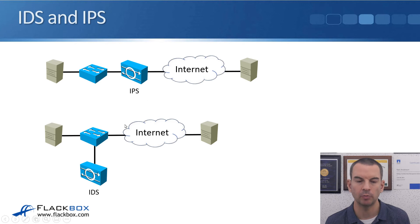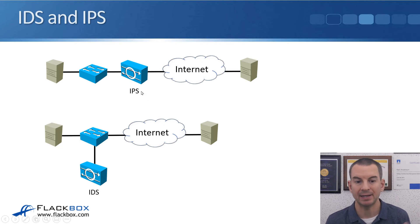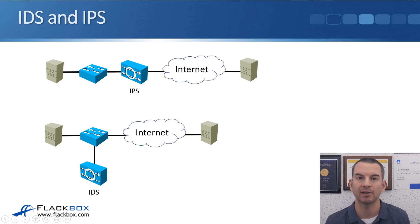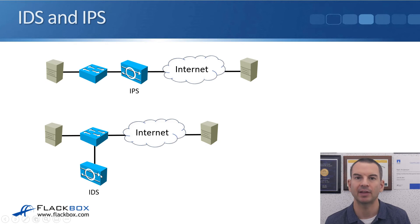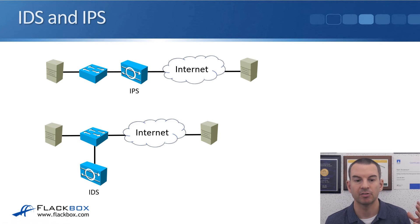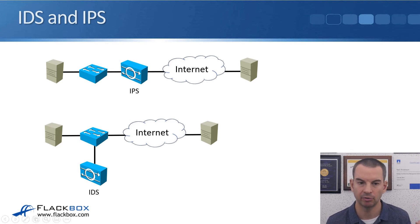The reason we have two different options is that an IPS can sometimes be a bottleneck. If there isn't enough throughput on the IPS to handle the traffic volume, you don't want it to slow down the network — you could use an IDS instead in that situation. There are other things we can do to help with that, such as clustering, which I'll talk about a little bit later.